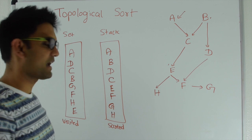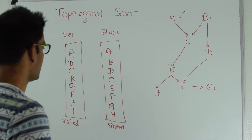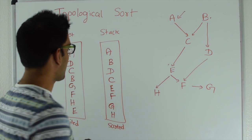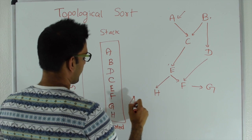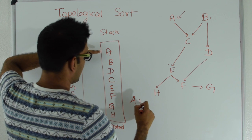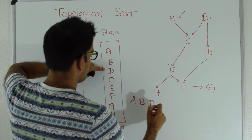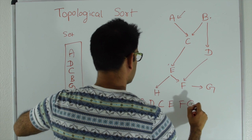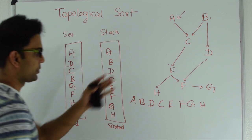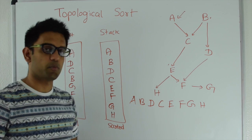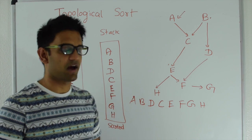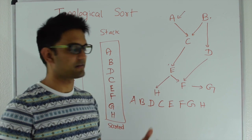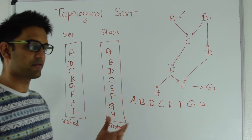At this point the stack has the topologically sorted order of vertices of this graph. We pop elements one by one: a, b, d, c, e, f, g, h. Remember, there are multiple valid topological sort orders possible for this graph — the order in which you pick vertices determines which one appears.